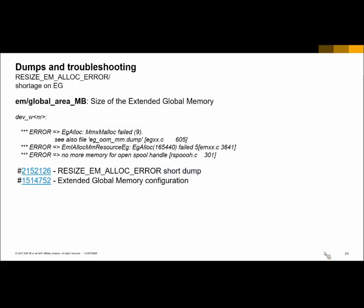The next dump is RESIZE_EM_ALLOC_ERROR. It occurs with an error in the EG Alloc call, meaning the program tries to allocate extended global memory and fails due to shortage on EG resources. You can see the error information in the work process trace file. This error can also appear even if no dump is generated in transaction ST22. In order to avoid the dump, you should increase the parameter EM_GLOBAL_AREA_MB. SAP note 1514752 recommends setting this parameter to 5% or 10% of the total extended memory size. You can monitor the usage of this EG memory area with ABAP report RS_MEMORY EG Overview during runtime.